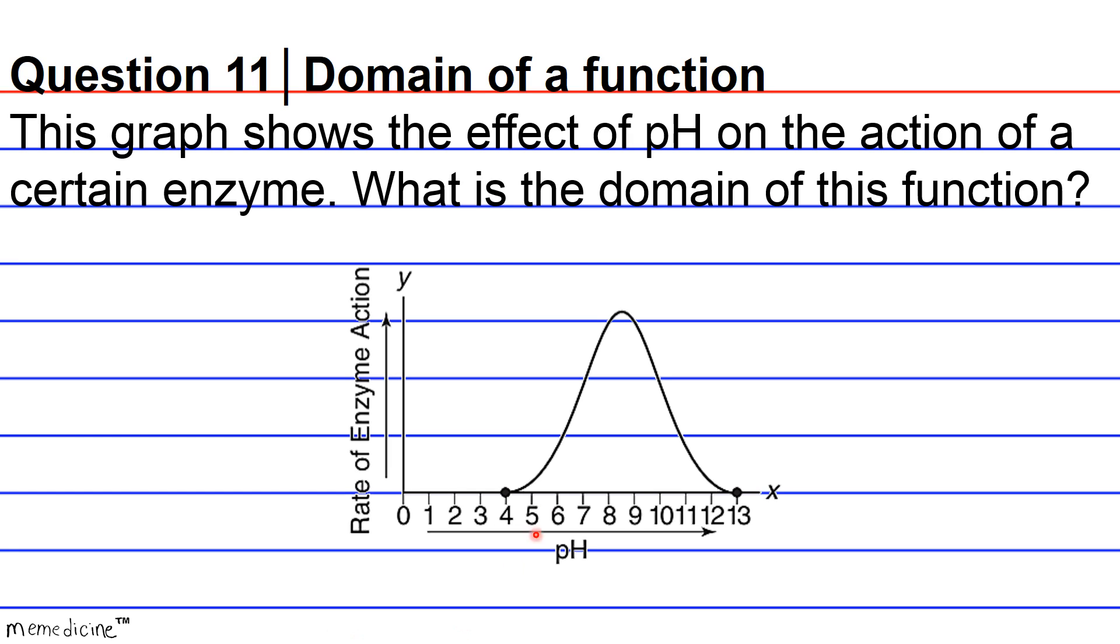Alright, let's get into the answer. So, the minimum x value on the graph is going to be 4, and the maximum x value is going to be 13. Additionally, x takes on all values between 4 and 13, and it's continuous within this interval. There are no interruptions in the function.